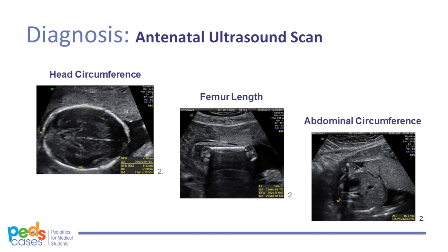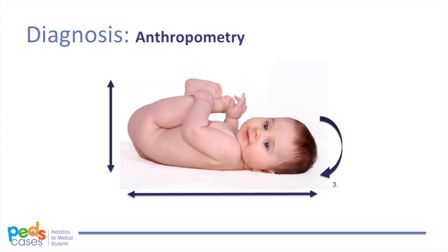IUGR is usually diagnosed during pregnancy, but can be diagnosed after birth as well. During pregnancy, antenatal ultrasound scans are performed to determine how well a fetus is growing. This is done by measuring head circumference, biparietal diameter, femur length, and abdominal circumference. These parameters are then used to calculate an estimated fetal weight, or EFW. Similarly, after birth, a baby's head circumference, length, and weight are measured. If the EFW on ultrasound scan, or true weight at birth, is less than the 10th percentile and an underlying cause can be found, the baby is diagnosed as having IUGR.